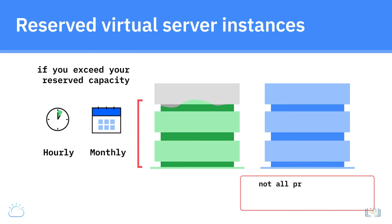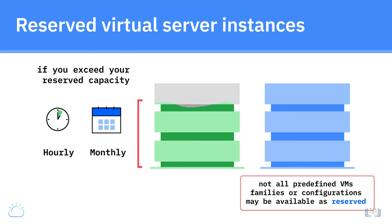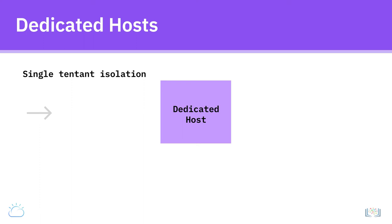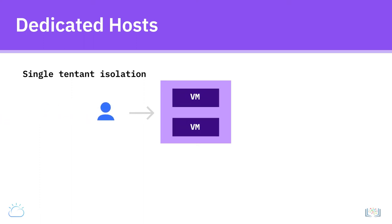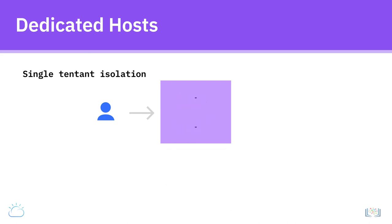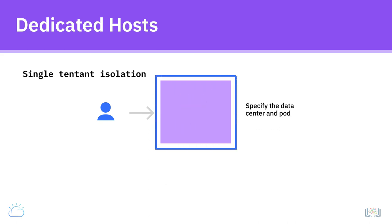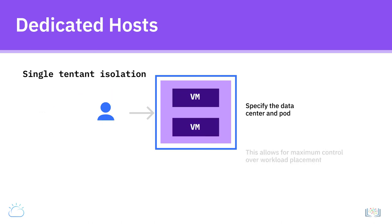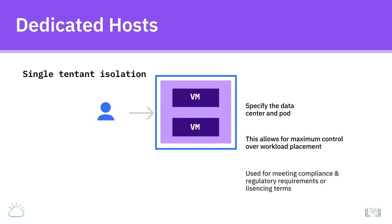Note, however, that not all predefined VM families or configurations may be available as reserved. Dedicated hosts offer single-tenant isolation. This means that only your VMs run on a given host so they can make exclusive use of the full capacity and resources of the underlying hardware. When provisioning a dedicated host, you need to specify the data center and pod in which you want your host placed. You then assign instances or virtual machines to a specific host, allowing for maximum control over workload placement.